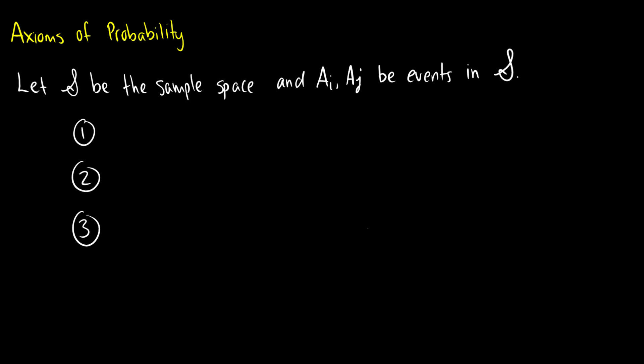Let S be the sample space and A_i, A_j be events in S — there can be an infinite amount of them. The first axiom is that the probability of any event happening is going to be equal to or greater than zero, meaning we can't have a negative probability. You just say there's a zero percent chance if it's not possible.